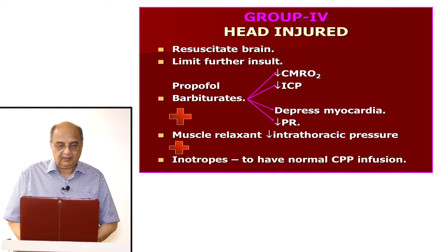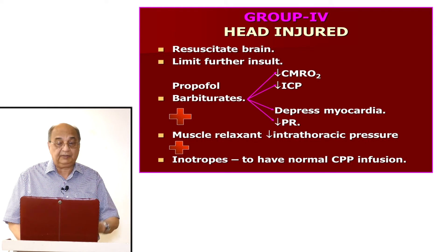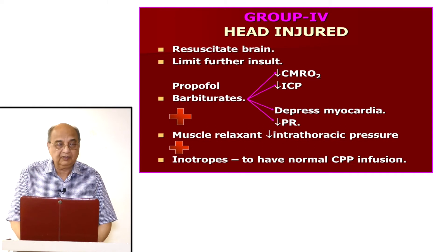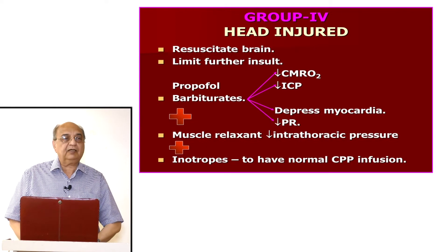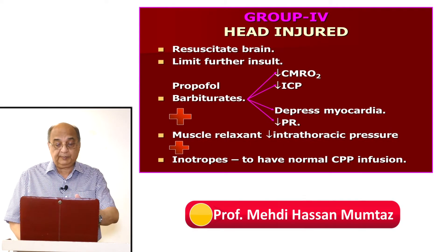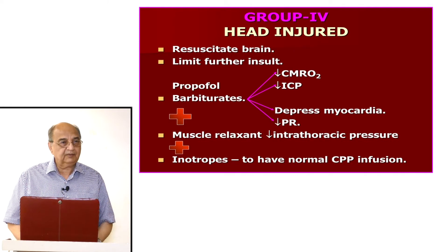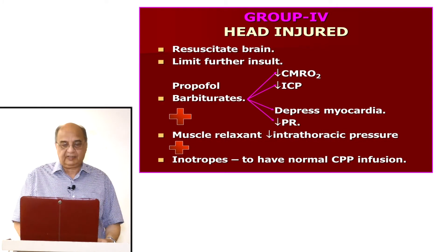Ideally, propofol infusion and barbiturate infusion are very good for head-injured patients. Intravenous anesthetic agents — except ketamine — all lower the cerebral metabolic rate of oxygen utilization and lower intracranial pressure. However, they also depress the myocardium and decrease peripheral resistance, which can lead to hypotension, so one must be very careful and monitor these two parameters.